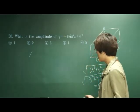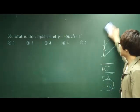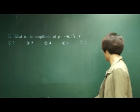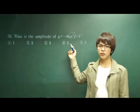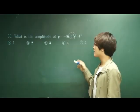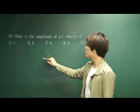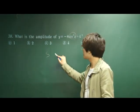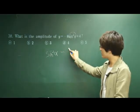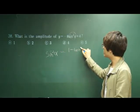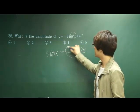Let's move on to number 38. What is the amplitude of y = -8·sin²x + 4? We need to convert sin²x using the double angle formula. Sine squared x equals (1 minus cosine 2x) over 2, so we replace sin²x with that expression.